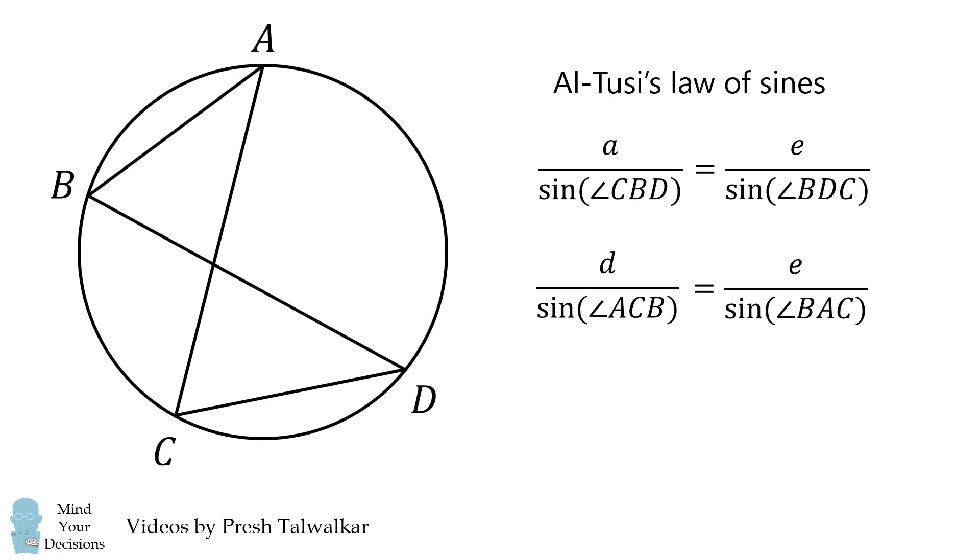In particular, angle BAC is an inscribed angle of arc BC and angle BDC is an inscribed angle of the same arc. Therefore, these two angles are equal to each other because they're inscribed angles of the same arc.